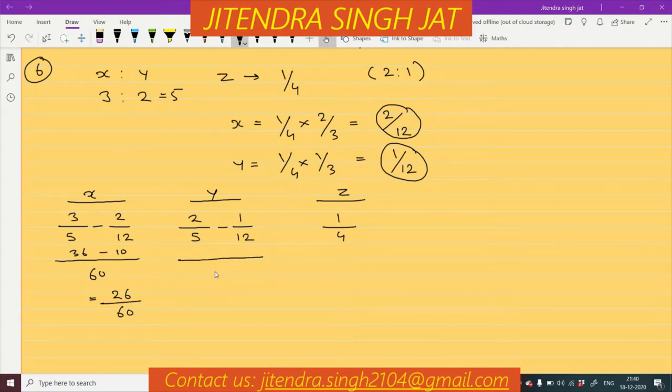Again, we take out LCM. 60, 5, 1, 5, 12, 2, 24. 24 minus 5, 19 by 60.